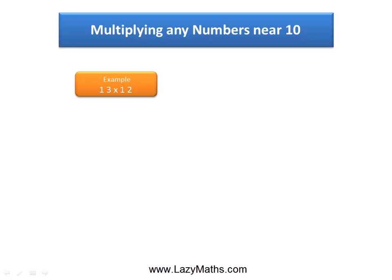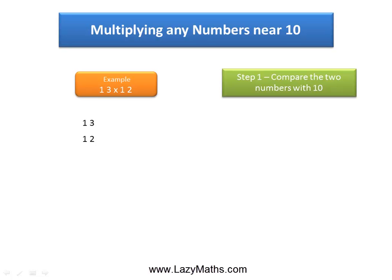Here's an example of multiplying any numbers near 10: 13 times 12. As you can see, both numbers 13 and 12 are close to 10, so we can compare them with 10.